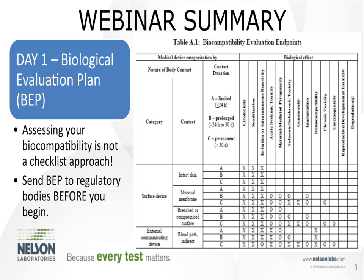For day one, Thor talked about the biological evaluation plan. A small portion of the FDA guidance document table is shown here — it helps identify the risks a device may pose to a patient. A big point is that assessing biocompatibility is not a checklist approach. It's not merely going to the table and doing every test with an X or O. It's understanding the real risk to your patient and performing the necessary tests or justifying why they're not necessary. Thor also emphasized submitting a BEP to regulatory bodies before you begin, so reviewers can identify any disconnects early.